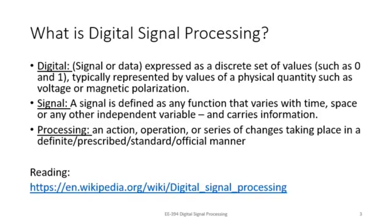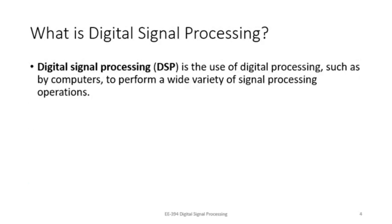At this stage, I would recommend referring to the Wikipedia article on digital signal processing. It's not very long, but it gives you a broader perspective of what this field is about. Digital signal processing is the use of digital processing — such as through computers or other means — to perform a wide variety of signal processing operations. With the discussion from the previous slide, this definition should be clear and self-explanatory.